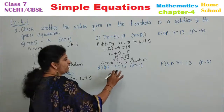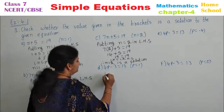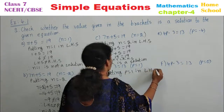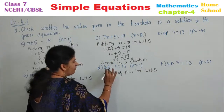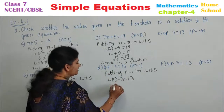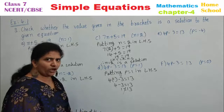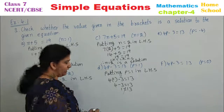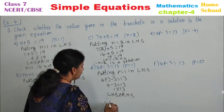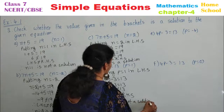D option: 4p minus 3 equals 13, with p equal to 1. Putting p equal to 1 in LHS: 4 times (1) minus 3 — 4 once is 4, and 4 minus 3 equals 1. 1 is not equal to 13. Therefore, LHS is not equal to RHS, so p equals 1 is not a solution of the given equation.